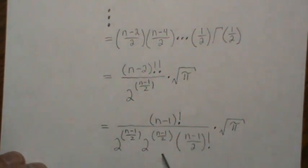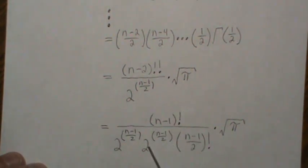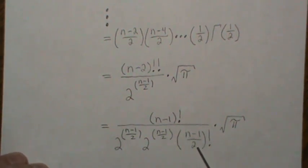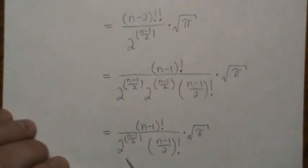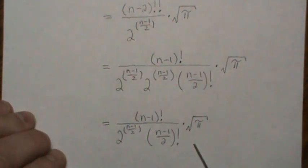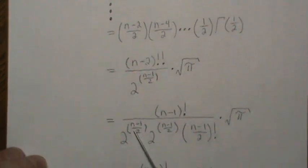Since n is odd, n minus two is also odd, so we can substitute in the formula for the double factorial of an odd number. The square root of pi comes down, the two raised to (n minus one)/2 is here, and combining the powers of two we arrive at the final formula: gamma of n over two equals this closed-form expression.